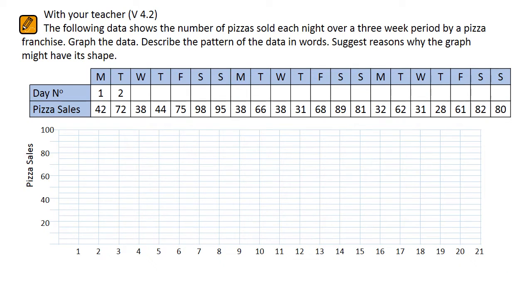In this example, we have to prepare a time series graph showing the number of pizzas sold each night over a three-week period. One of the first things to do before graphing is to complete row 4, the day number.